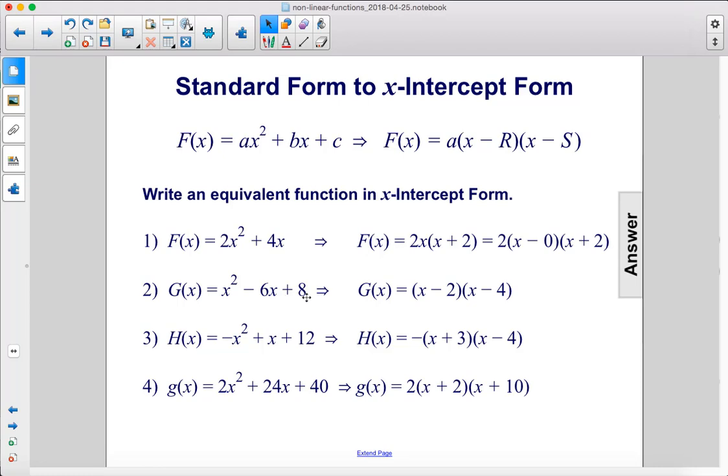Here we can just factor it into x minus 2 times x minus 4. This one we can factor by first factoring out the negative sign and then factor the rest of the function. And here we can factor out a 2 first and then x plus 2 times x plus 10.